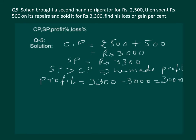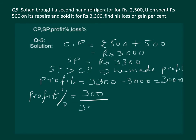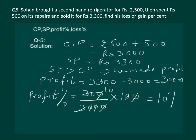Now we have to calculate the profit percentage. Remember, profit percentage and loss percentage are both calculated on the cost price. He gained rupees 300 on an investment of rupees 3000. Substituting in the formula — profit divided by cost price, multiplied by 100 — the profit percentage comes out to be 10 percent. So we have easily found out the gain percent.